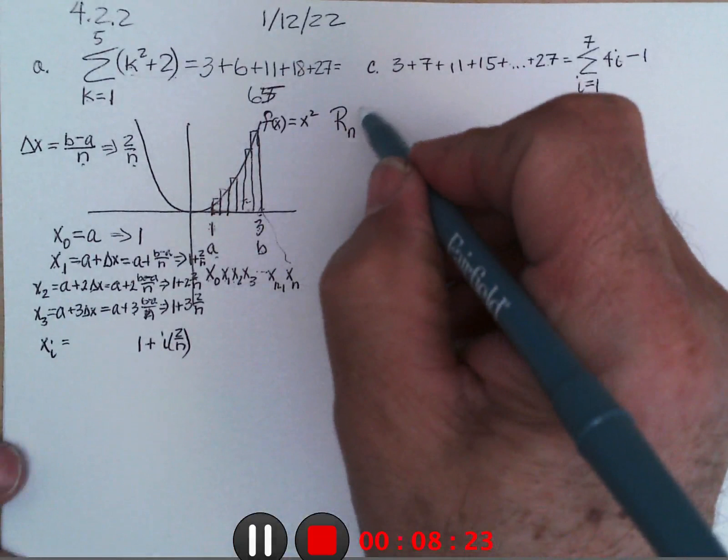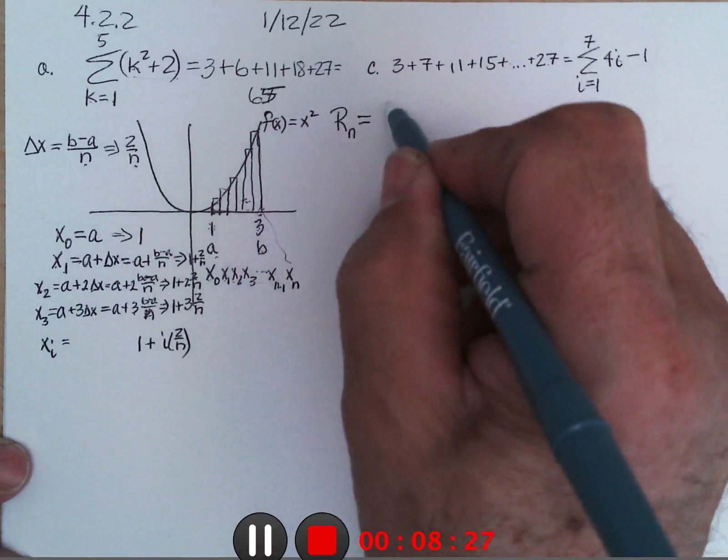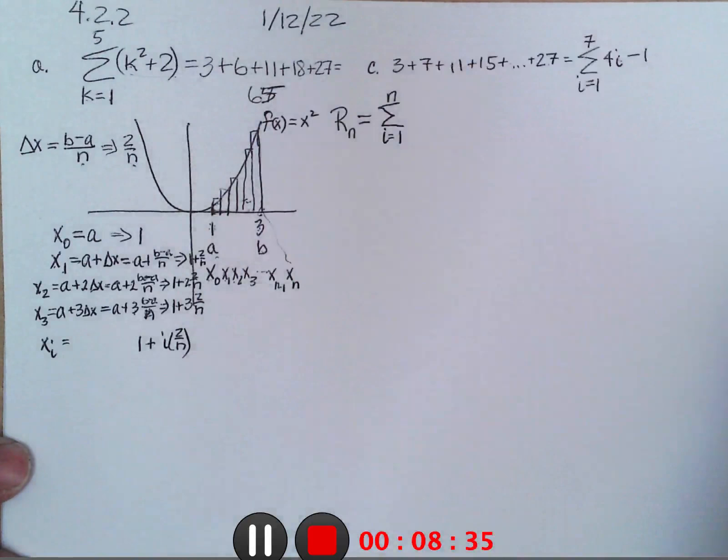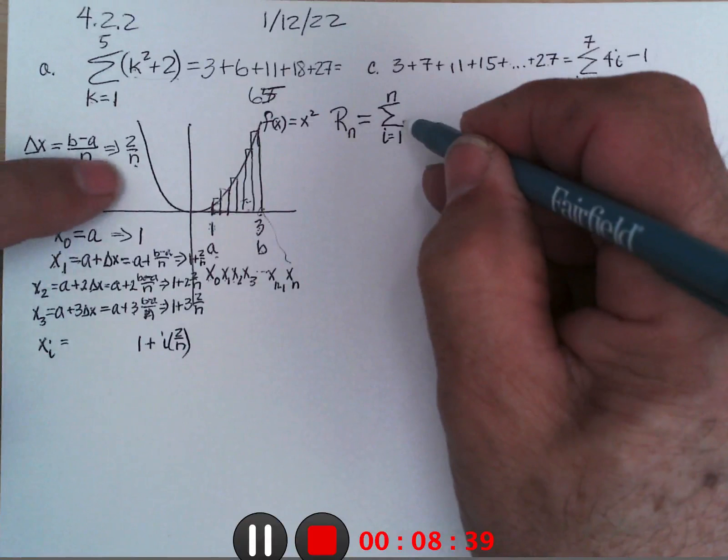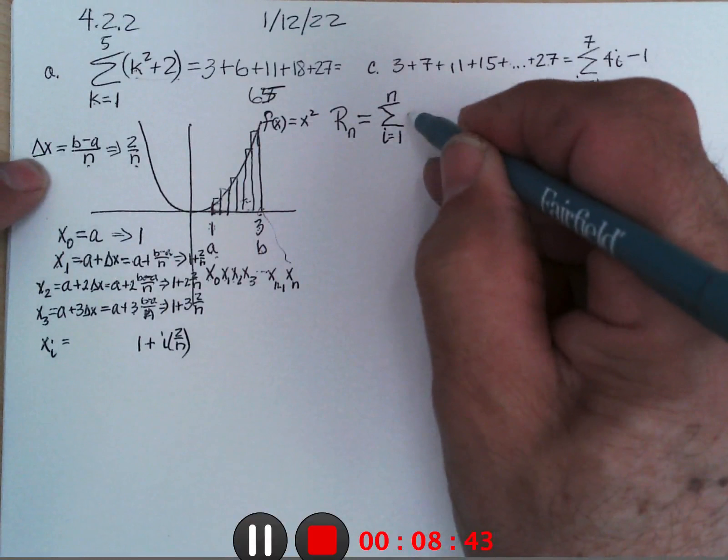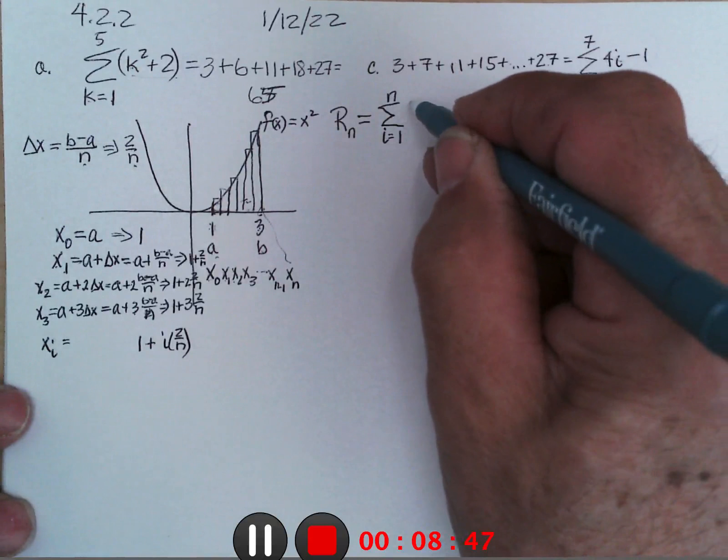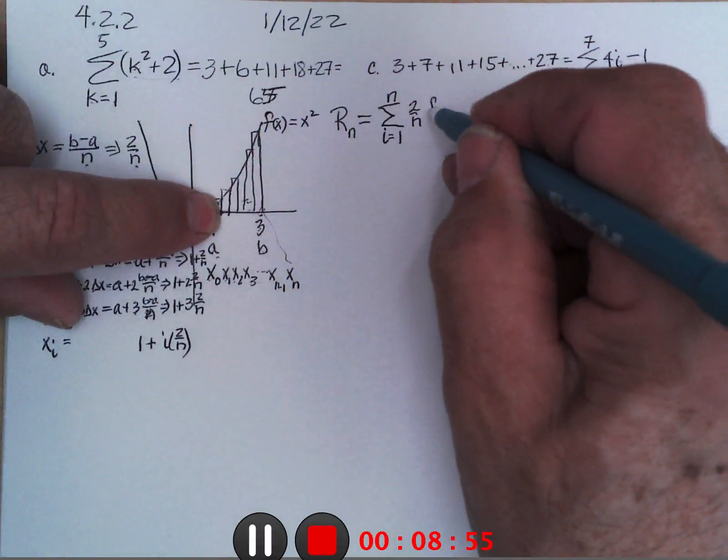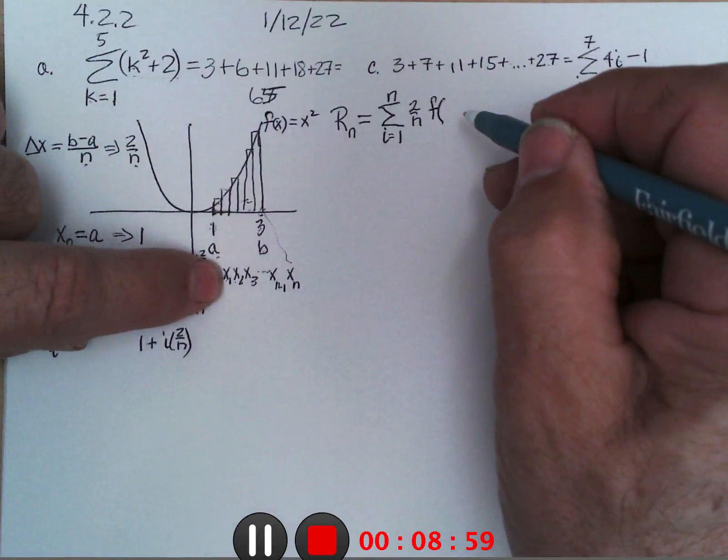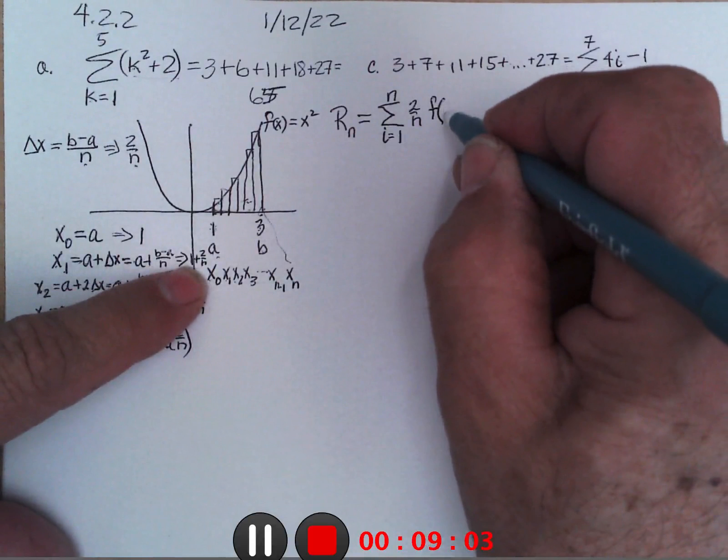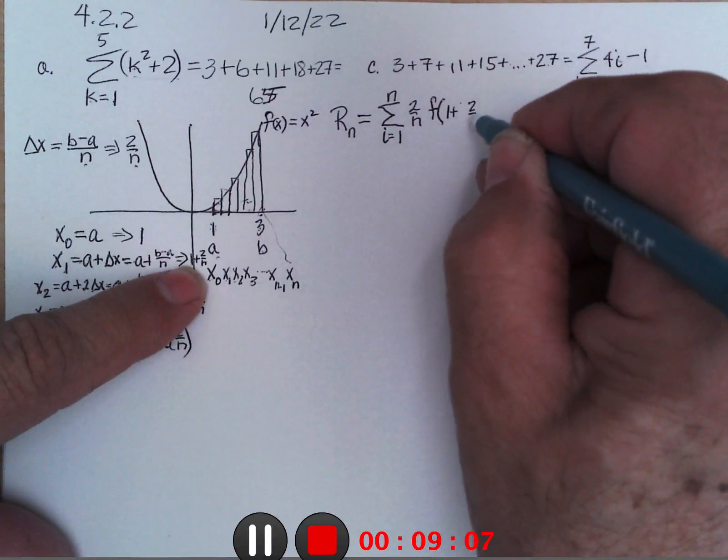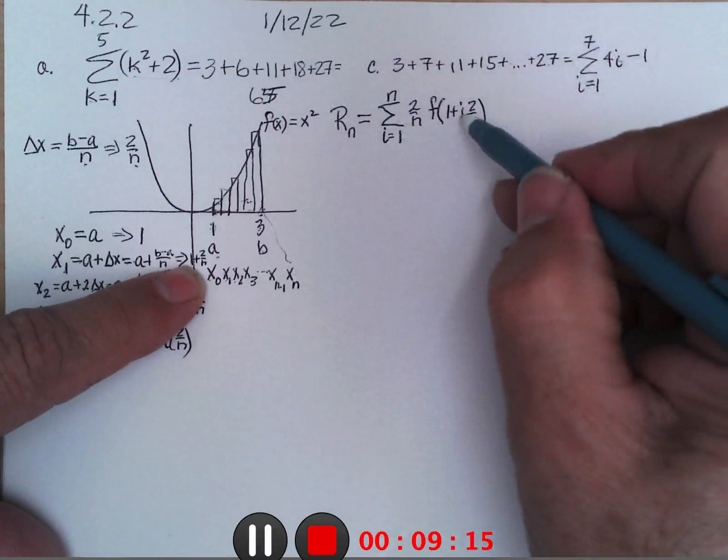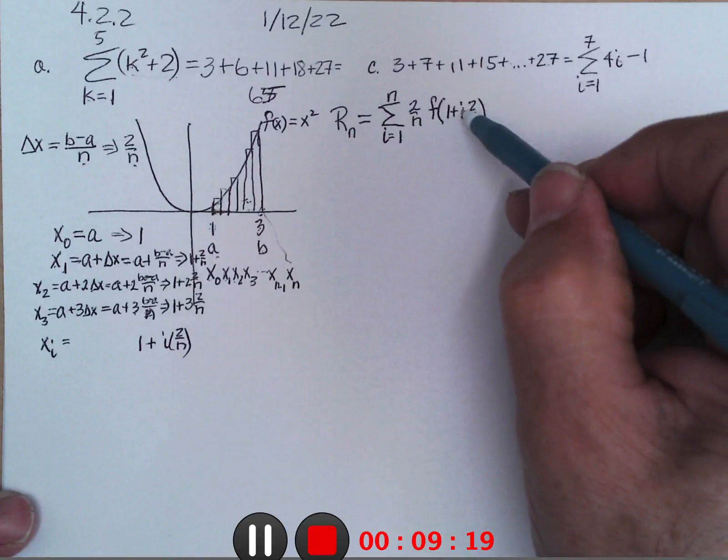So if I were doing the right-hand sum, it would be the sum, i would start at 1 and go to n, and it would be the width of the interval which is delta x or 2 over n in this particular case, times the height on the right-hand side. So that would be f of the right-hand side, which would be x1. But x1 is 1 plus 2 over n. But then when i is 2, I want to have 2 of these, so I'm going to put i there.